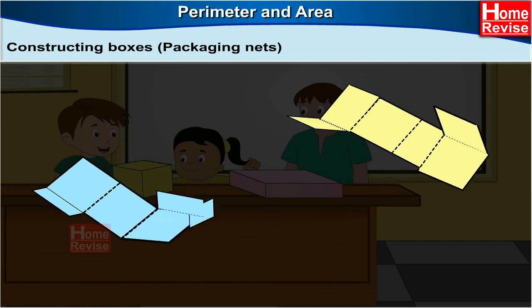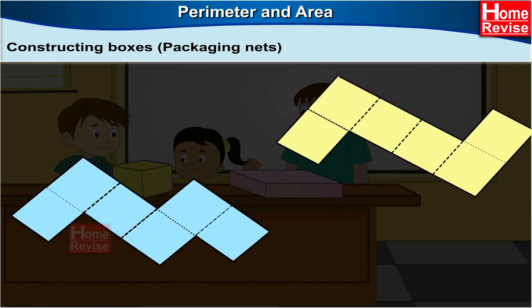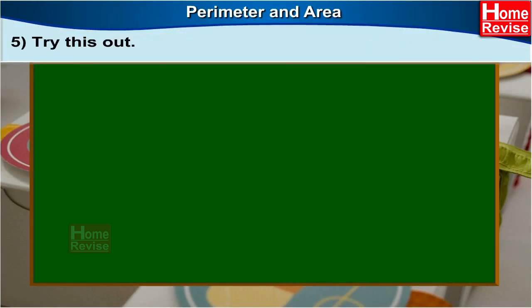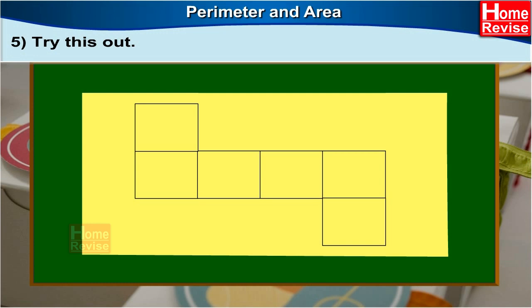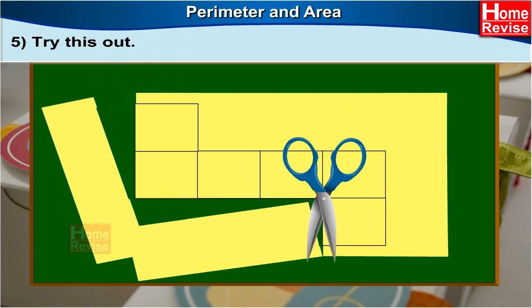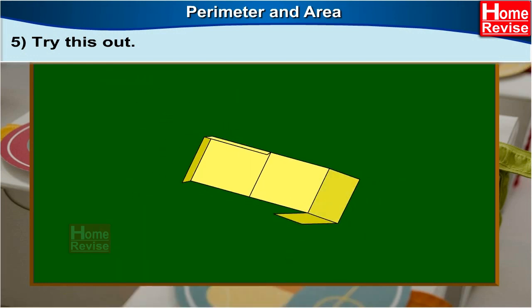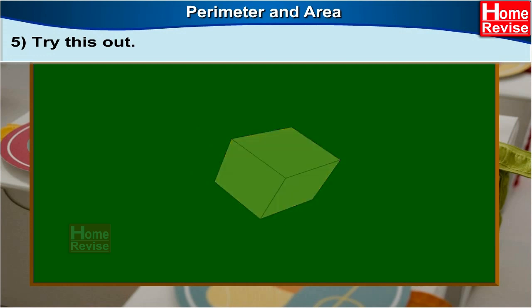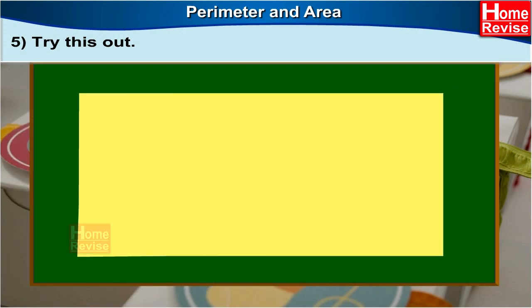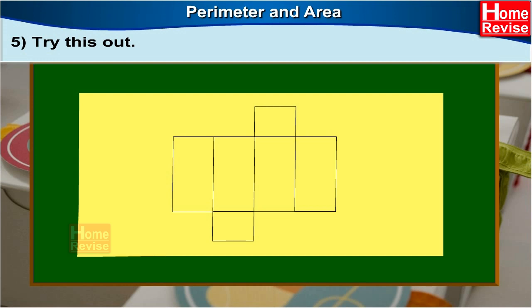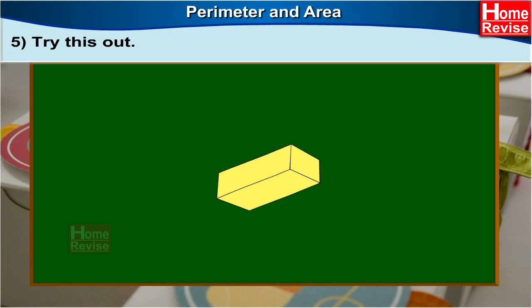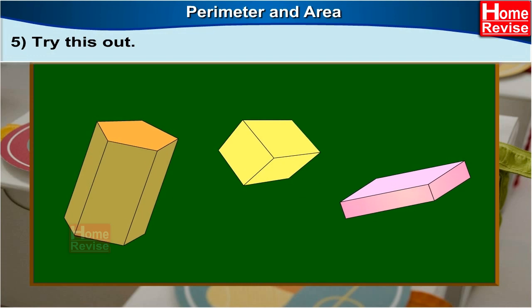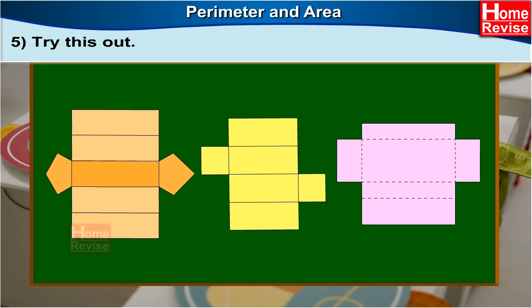Try this out. Take a piece of thick rectangular paper. Draw 6 joined squares as shown in the picture. Cut out the remaining part. Fold the squares along the thick lines to make boxes. Now, take a rectangular piece of thick paper. Draw 6 joined rectangles as shown in the picture. Cut out the remaining paper. Fold the rectangles along the thick lines to make boxes. Collect boxes of different shapes used to store different things. Now, open them up and study their structure.